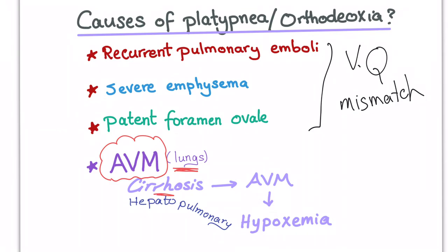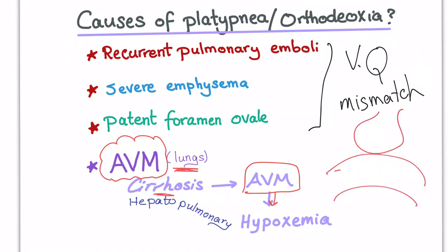Cirrhosis leads to AVM. Arteriovenous malformations will lead to hypoxemia because blood is shunting with no effective gas exchange — deoxygenated blood remains deoxygenated, resulting in hypoxemia and then hypoxia.